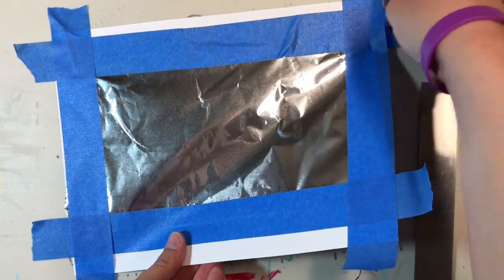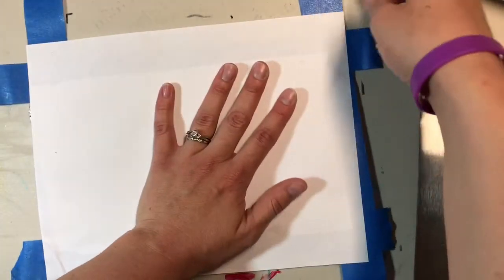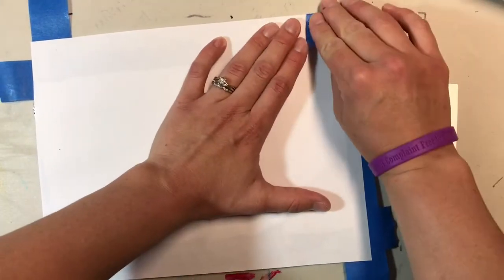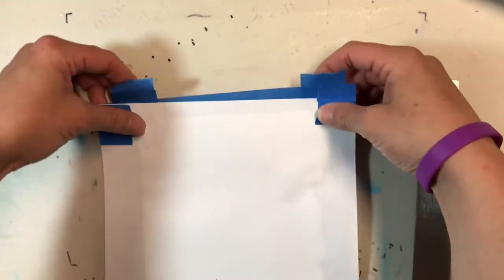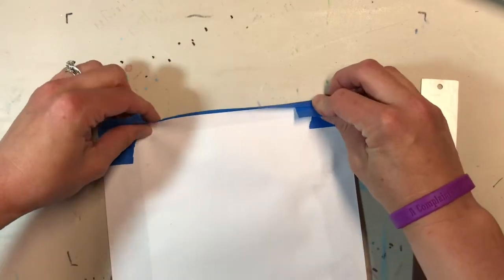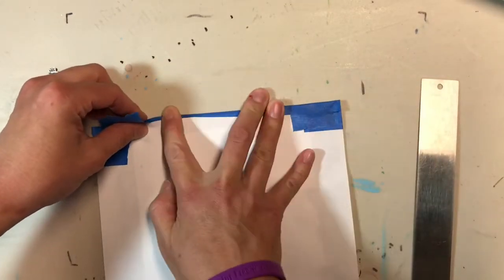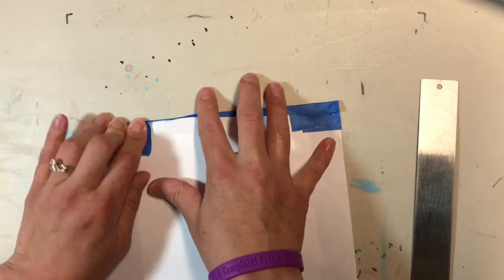You can just take the tape and fold it over the back side of your paper. Or what I do, not in the video, is I just cut off the extra and throw it away. So it becomes a smaller paper, but it looks like the blue tape is now framing the picture instead of any white showing.